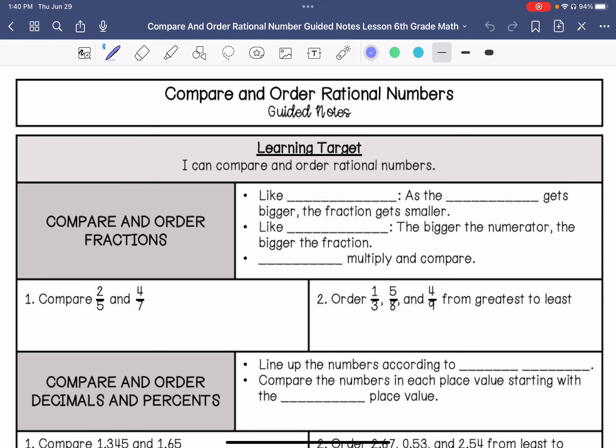We are going to compare and order rational numbers. If fractions have like numerators, as the denominator gets bigger the fraction gets smaller. If they have like denominators, the bigger the numerator the bigger the fraction, or you can cross multiply and compare.